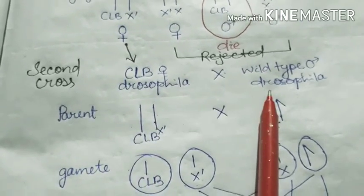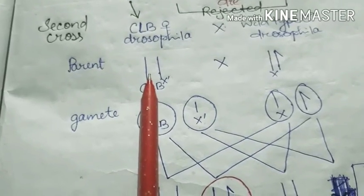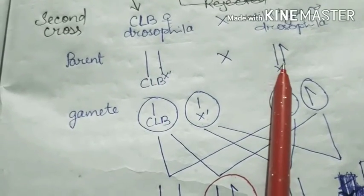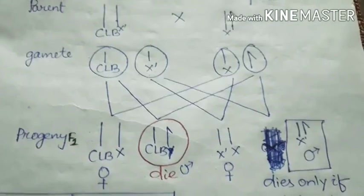Now he took this to the second cross with the wild variety of Drosophila. The parent is the CLB female and the wild type variety of Drosophila. Here's what happened.